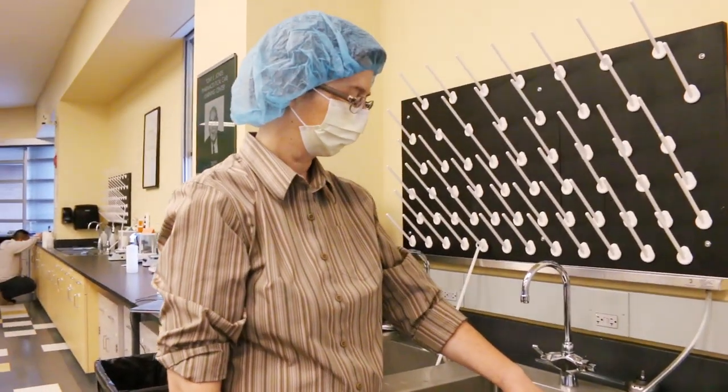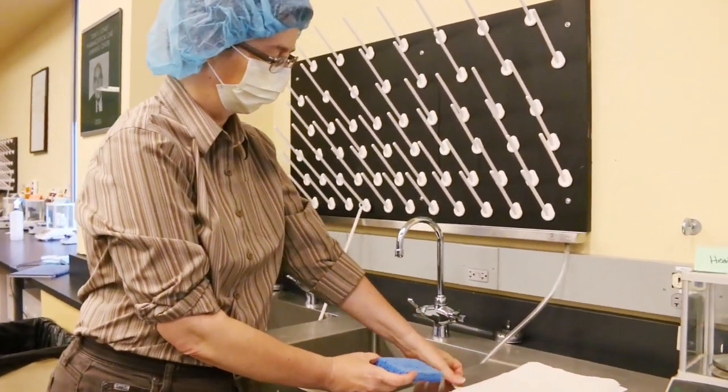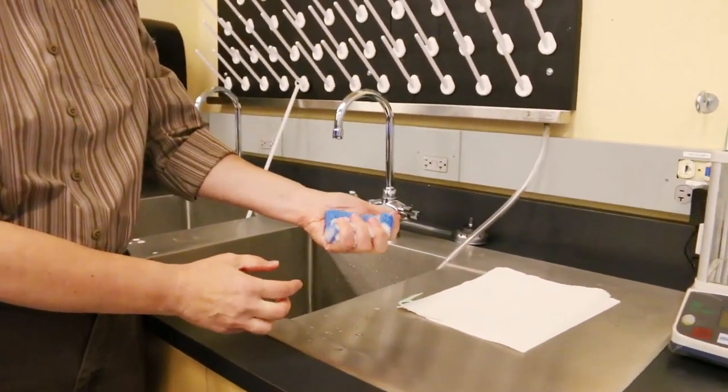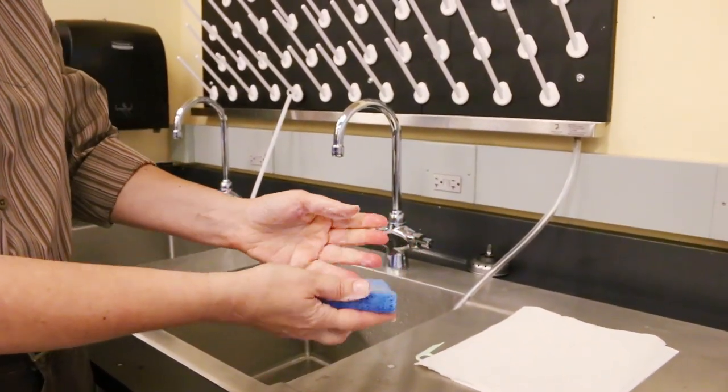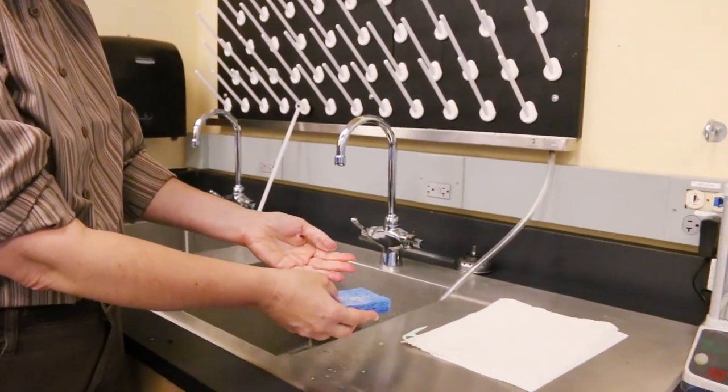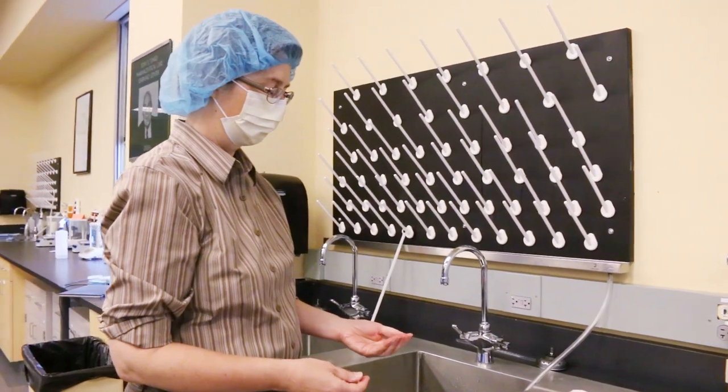Step 9, we move to the sink for aseptic hand washing. 9A is to squeeze the surgical scrub sponge or brush several times to activate the soap suds. 9B is to open the packet, removing the sterile sponge or brush and hold that in your dominant hand.